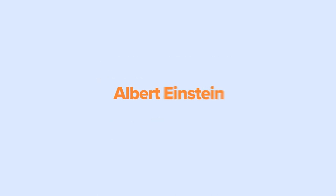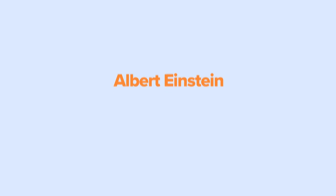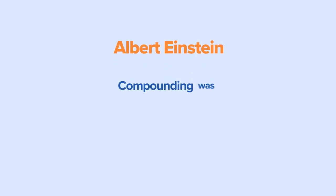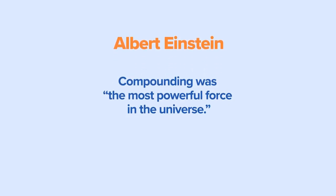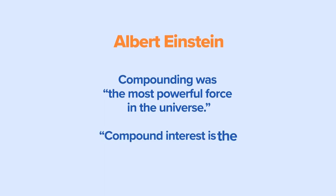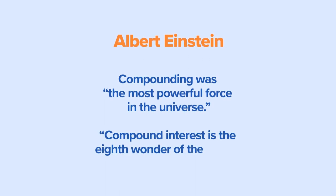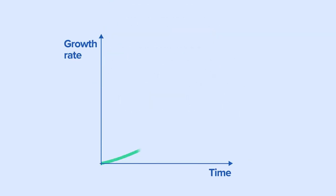Albert Einstein is reported to have said that compounding was the most powerful force in the universe, and compound interest is the eighth wonder of the world. Many things in the natural world grow at exponential rates. The financial industry has adopted a simple form of exponential growth called period compounding.